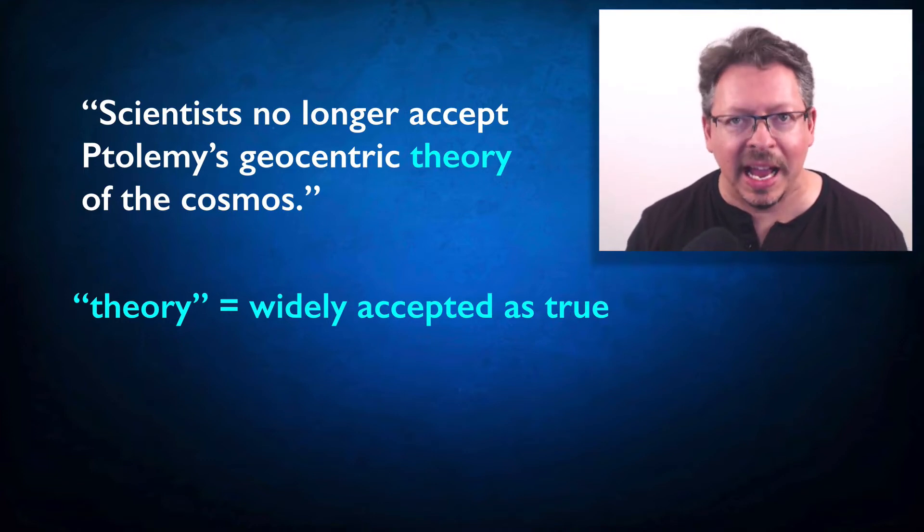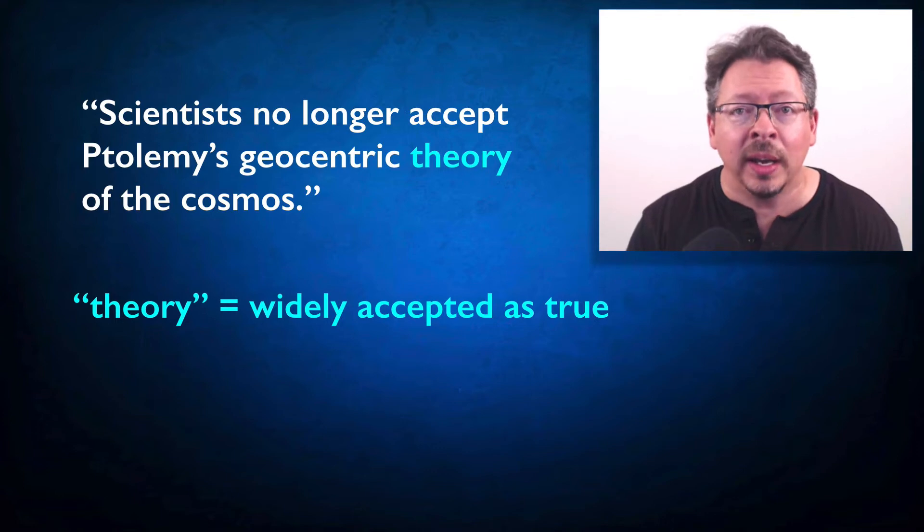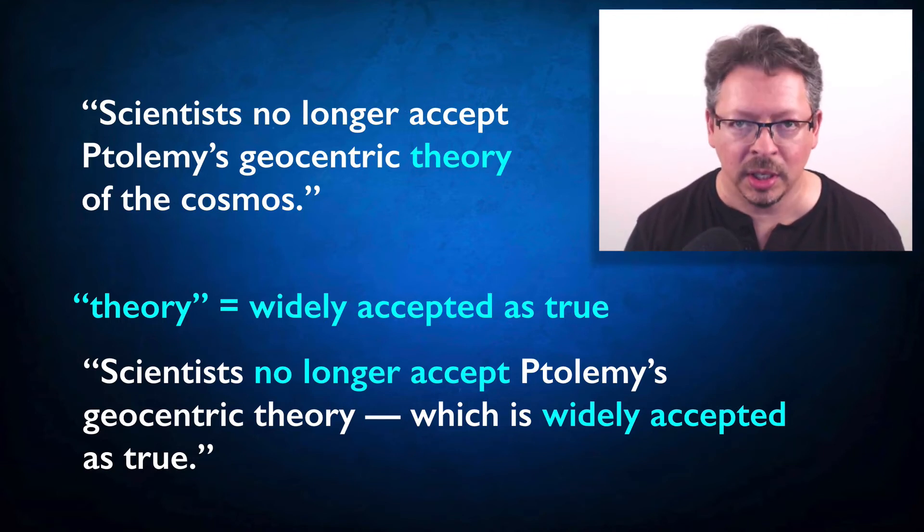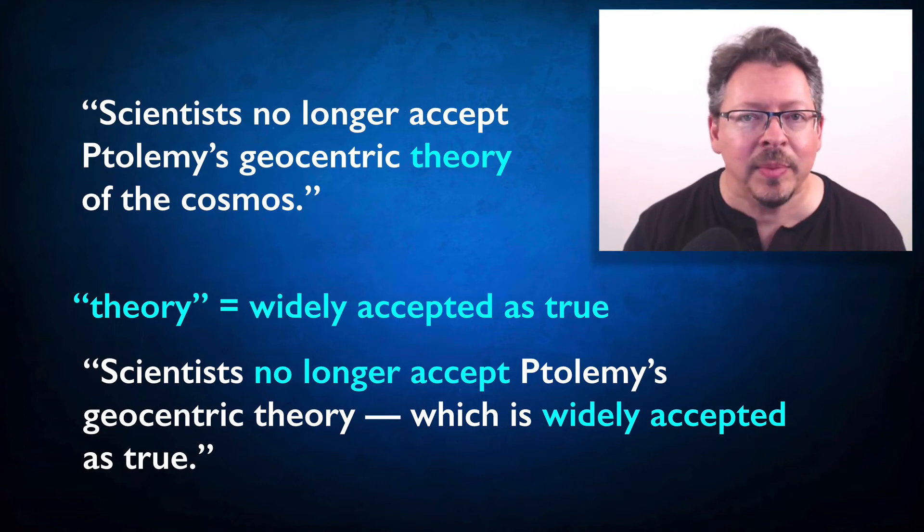Just look at how that would translate. If we read theory as implying that the model is widely accepted as true, as well supported by the evidence, then we're left saying this: Scientists no longer accept Ptolemy's geocentric theory, which is widely accepted as true. If we're saying this about scientists' current attitudes towards Ptolemy's theory, then we're literally contradicting ourselves. The same theory can't be both widely accepted and not widely accepted.